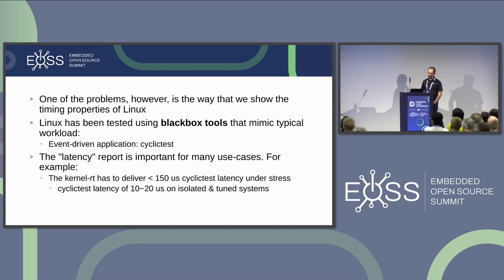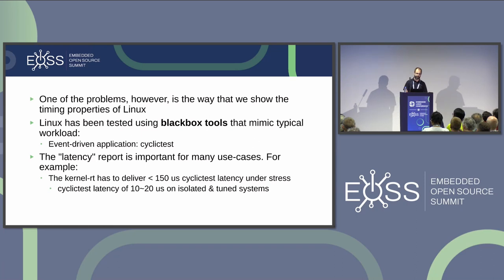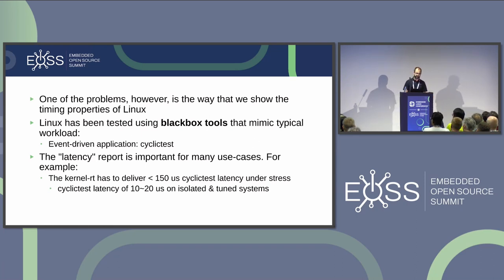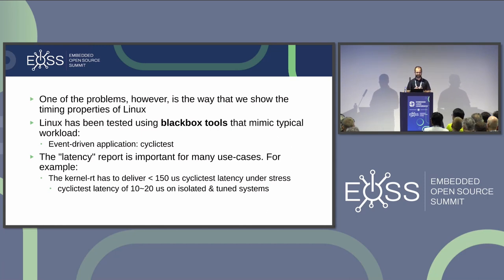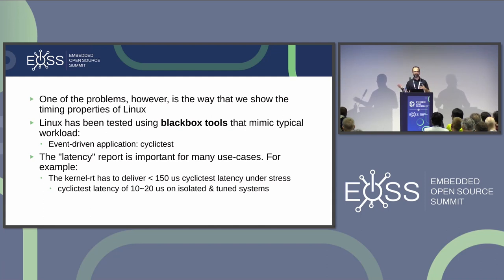One of the problems when we try to say Linux is a real-time OS is the way we show these properties. Linux has been tested using a black-box-like method. When you start talking with people who run real-time systems on critical systems, they say: the black box gives me the number, but it doesn't give me why that number happened, how I can debug it, or how I can explain whether that's a bad scenario or not.